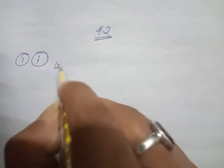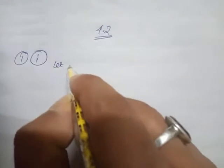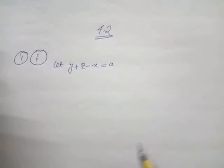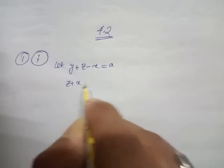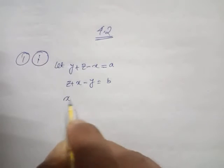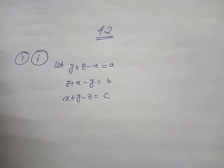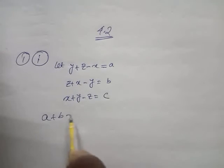Let the first substitution be: y plus z minus x equal to a, the next one z plus x minus y equal to b, and x plus y minus z equal to c. After that, we will compute the addition a plus b plus c.